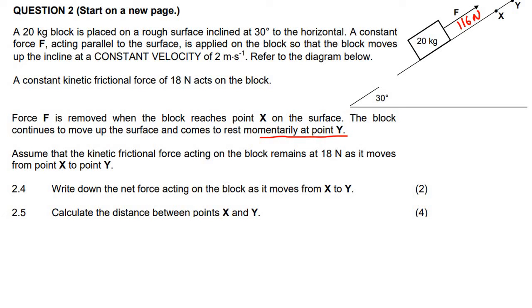It says assume that the kinetic friction force acting on the block remains 18 newtons like it was. Write down the net force acting on the block as it moves from X to Y. The answer is not zero. So let me quickly explain. If we do our free body diagram, now that this force has been removed, we can actually just take that force away.